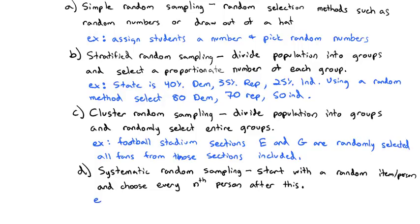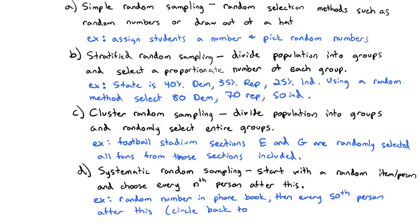An example of this might be if I pick a random phone number in the phone book, and then I choose every fiftieth person after this until I circle back to the beginning. I'm going to go all the way through and back to the beginning and back to where I was, taking every fiftieth person. Those are our four random sampling methods that you should be able to identify for this course.